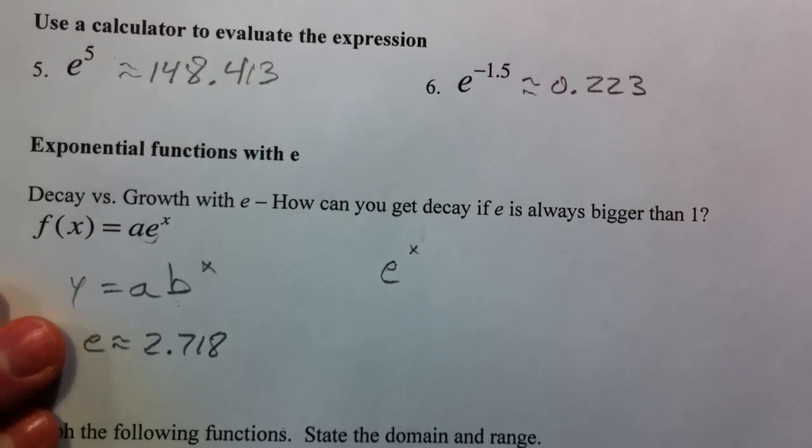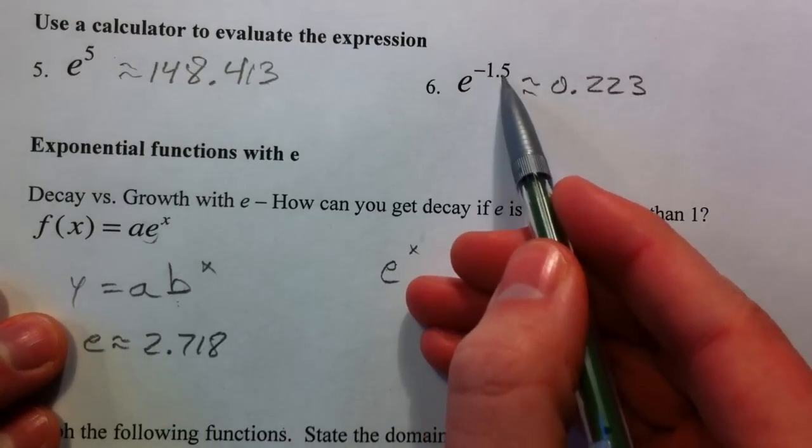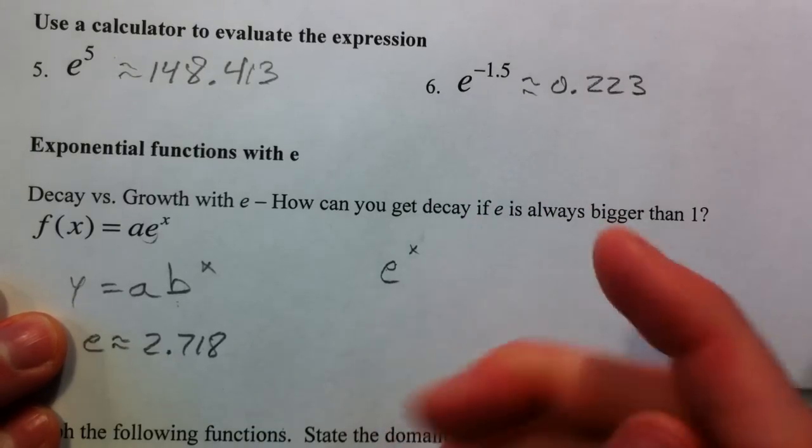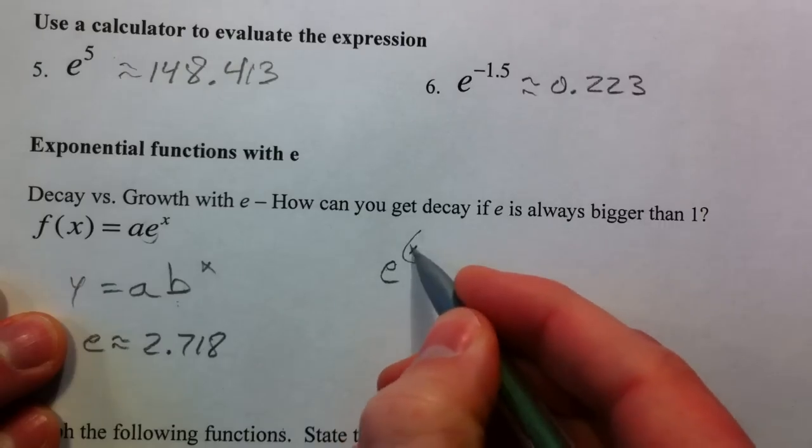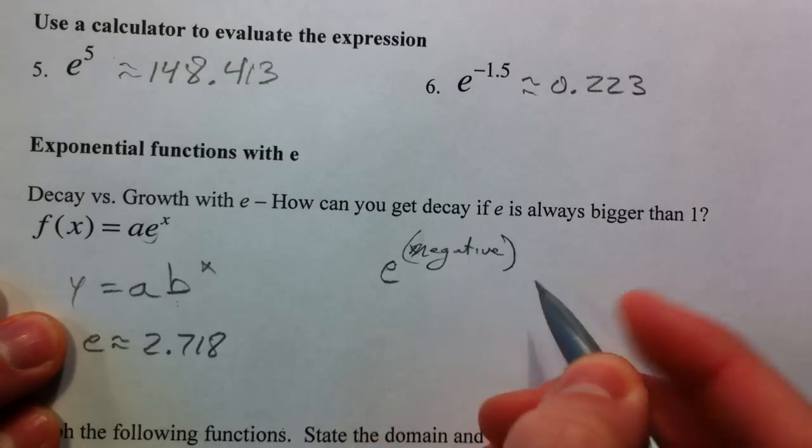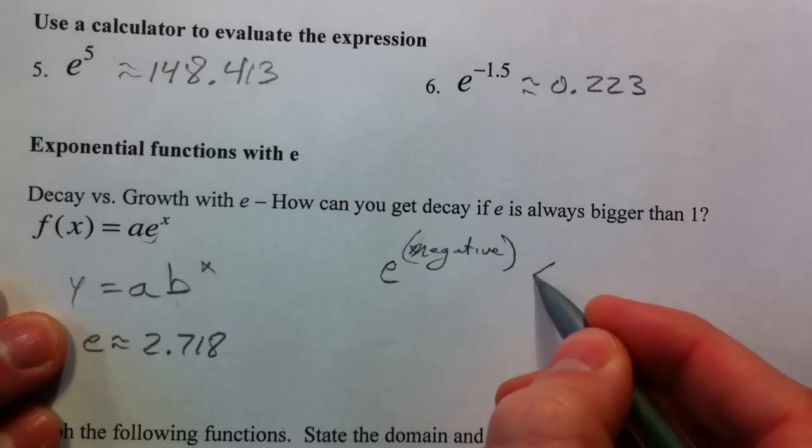The answer is what we just did up here. e to the negative 1.5 gave us an answer that was less than 1. Remember how when we take the reciprocal, we have a negative exponent.